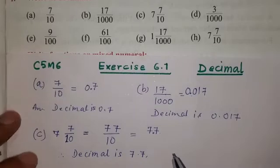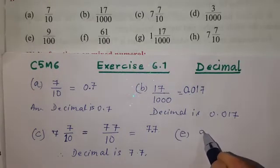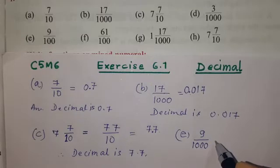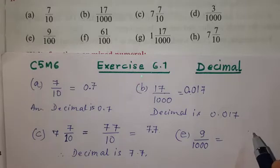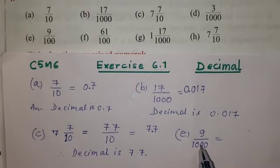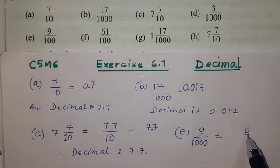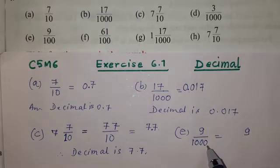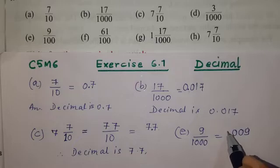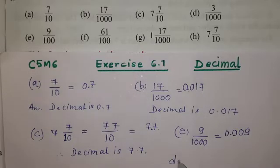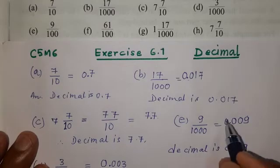Now question number D and E. Number E: 9 by 100. Then 9 by 1000. First of all, how many numbers? 9 by 100 — one digit in the numerator. The denominator 1000 has three zeros: one, two, three. The decimal is 0.009.